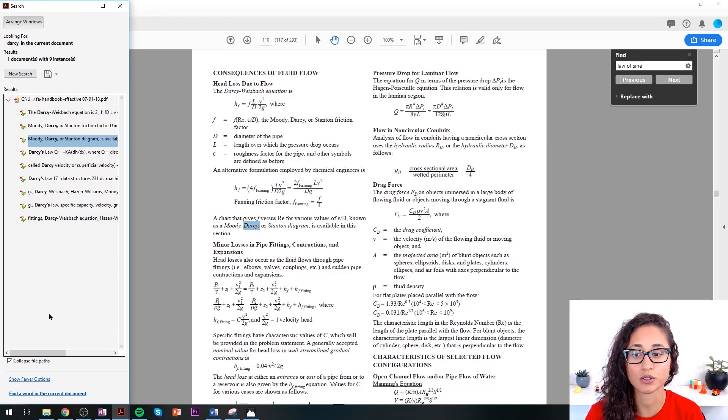But yeah, so this is how it really looks like. So remember guys, it's Ctrl+Shift+F. That's how you search for it. This is how your screen is going to look like in the FE exam. I hope this was helpful guys.